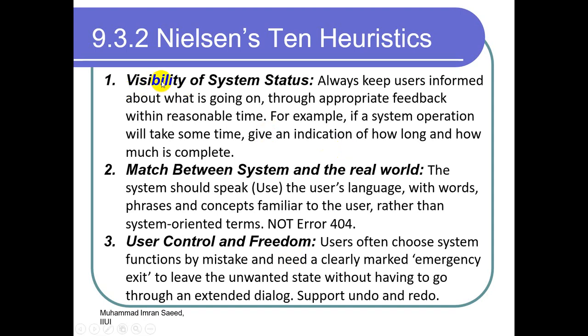Number one: visibility of system status. We must show the user at any time what the system is doing. The user must always know what is being done for them. Always keep users informed about what is going on through appropriate feedback within reasonable time. For example, if a system operation will take some time, give an indication of how long and how much is complete. A simple example is the status bar when copying files.